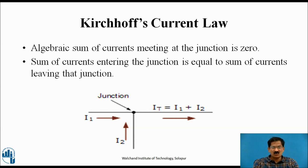Kirchhoff's Current Law: It is also called the point law. The algebraic sum of current meeting at the junction is zero. In other words, sum of currents entering the junction equals the sum of currents leaving the junction.